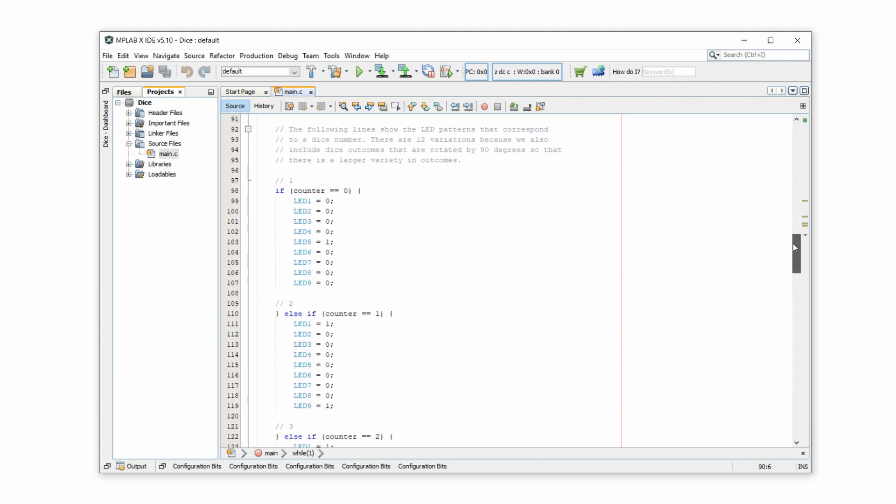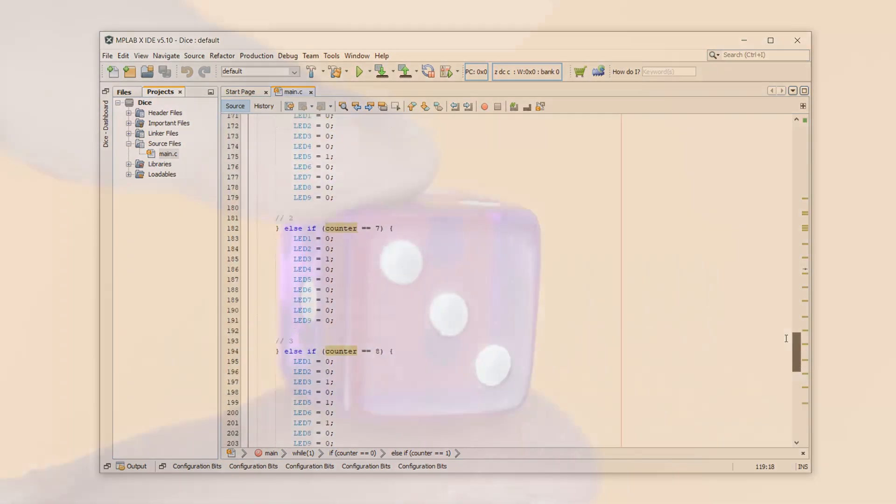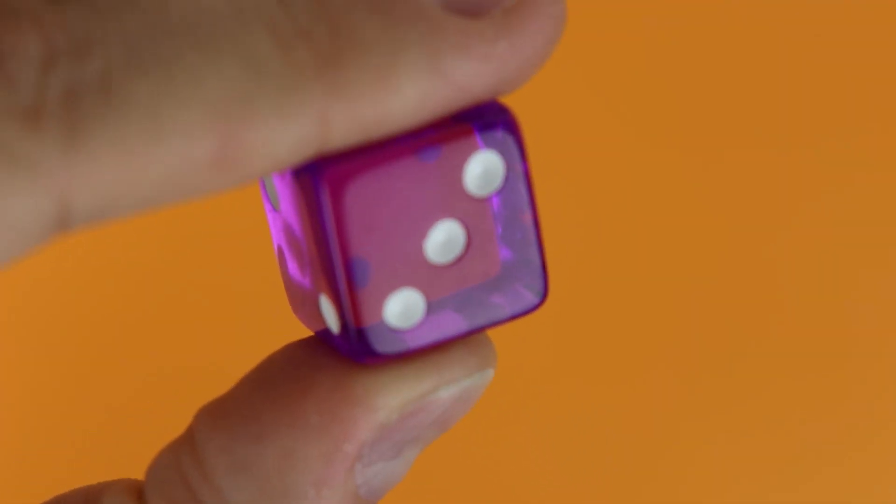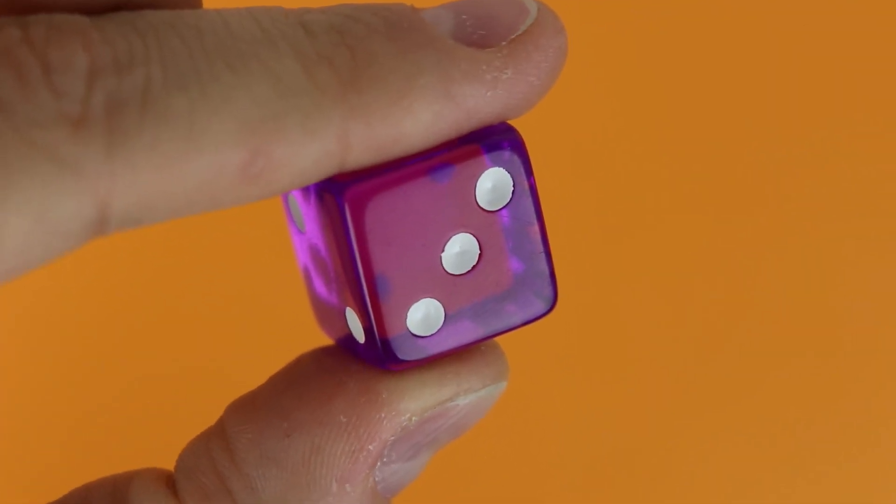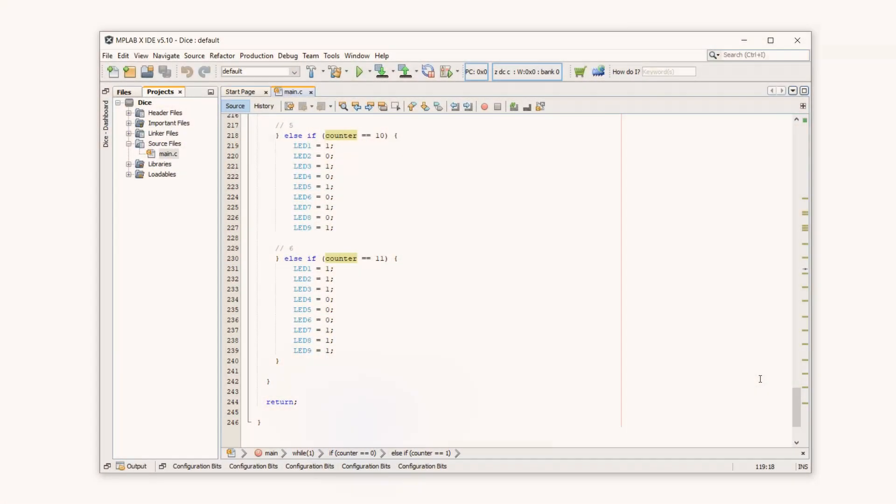In the last part, we take the counter variable and set the LEDs. Each counter number corresponds to a number represented on the dice. We have all numbers in here twice, which is why we count from 0 to 11, because some numbers can be rotated by 90 degrees. This makes the dice look a little bit more interesting, I think. And that's it.